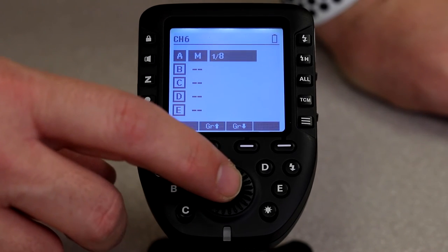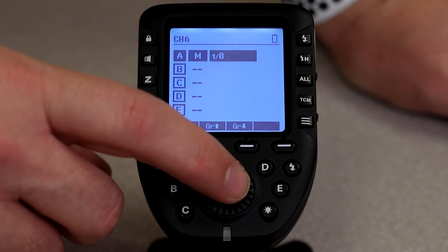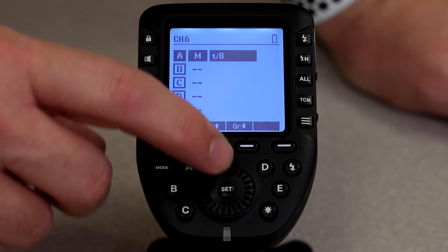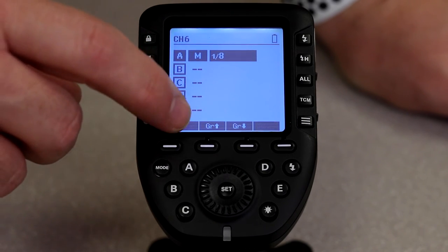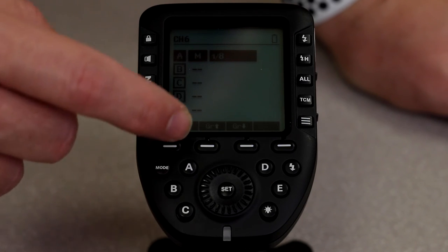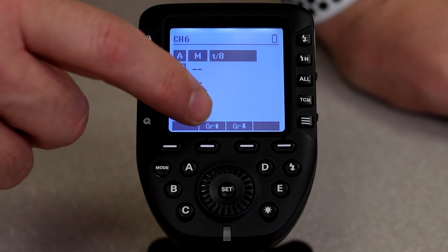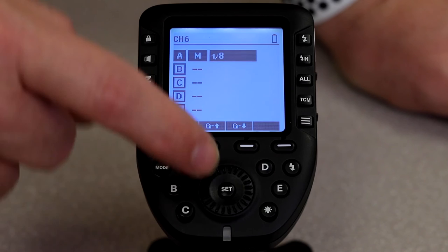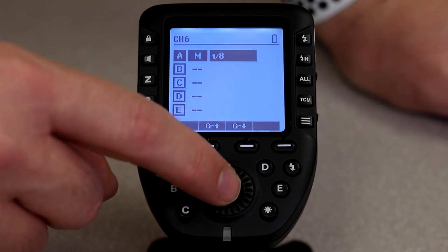And also people get confused sometimes because if they hit set and didn't mean to, they'll lose some of those menus down there, and so they'll say, hey, how do I change the channel because I don't see a button for that? Well, it's because you had hit set and so it's trying to change the power setting. If you hit set again to confirm, now those buttons pop back up.